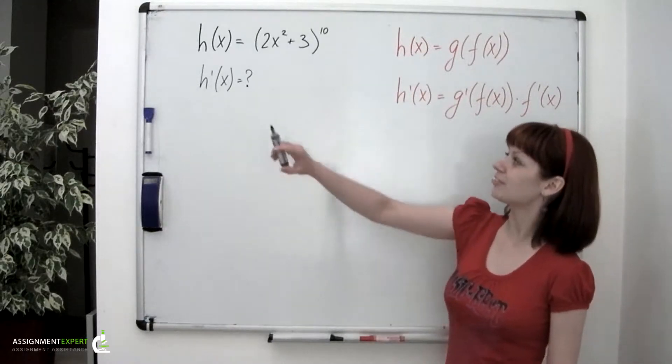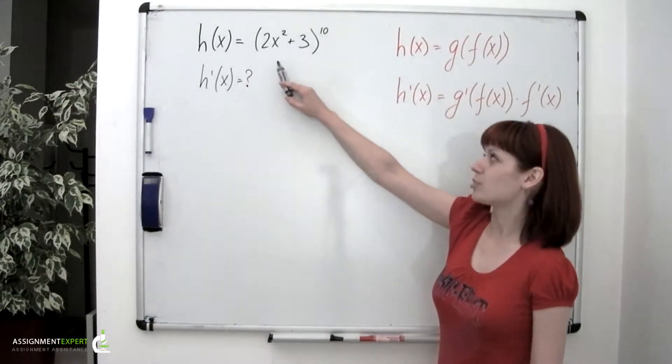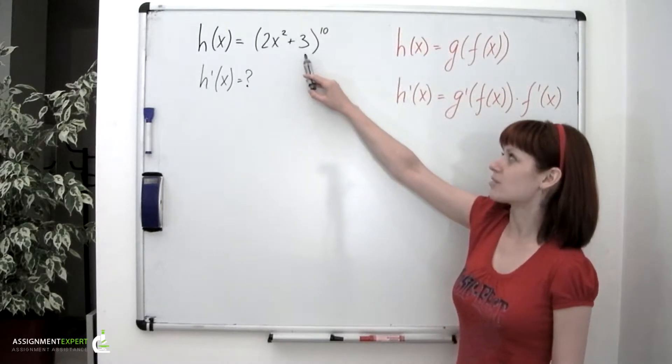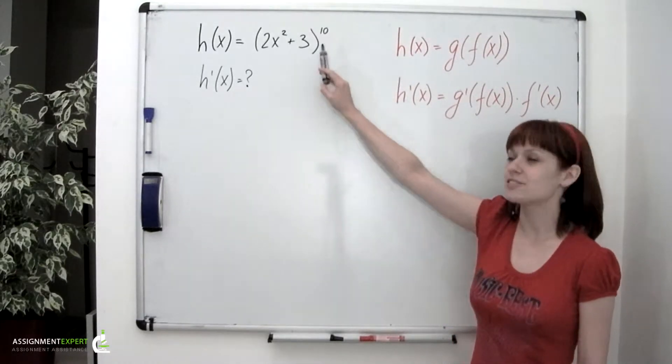Example 1. We have a function, h of x, which is equal to 2 times x squared plus 3 raised to 10th power. And we need to find its derivative.